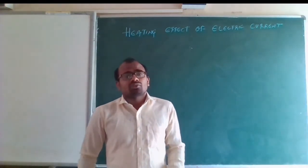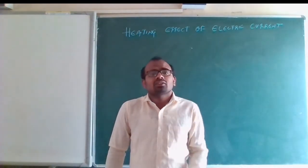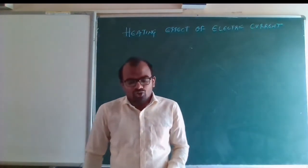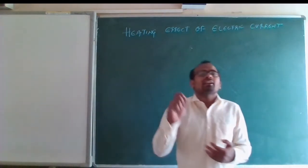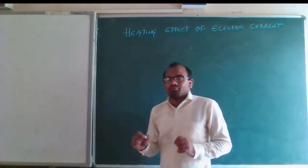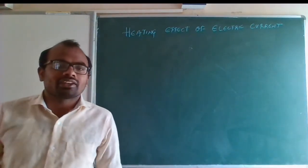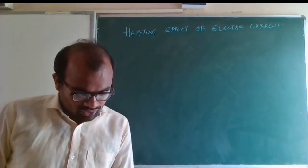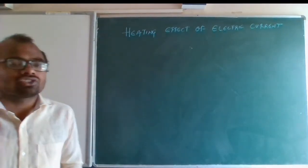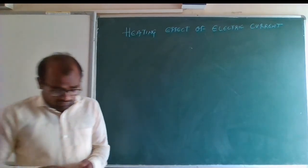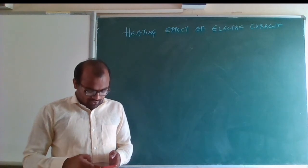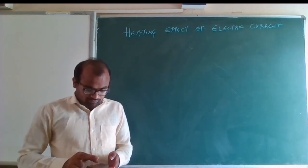For example, an iron — that is the heating effect of the iron. Whatever current is flowing produces heat. So whenever an electric current passes through an object, heat is produced in that object — this process is called the heating effect of electric current.